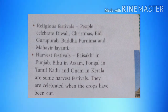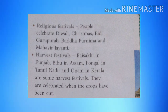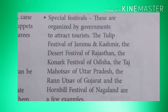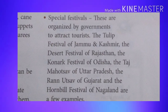Harvest festivals: Baisakhi in Punjab, Bihu in Assam, Pongal in Tamil Nadu and Onam in Kerala are some harvest festivals. They are celebrated when the crops have been cut. Special festivals: These are organized by governments to attract tourists. The Tulip Festival of Jammu and Kashmir, the Desert Festival of Rajasthan, the Konark Festival of Odisha, the Taj Mahotsav of Uttar Pradesh, the Rann Utsav of Gujarat and the Hornbill Festival of Nagaland are a few examples.